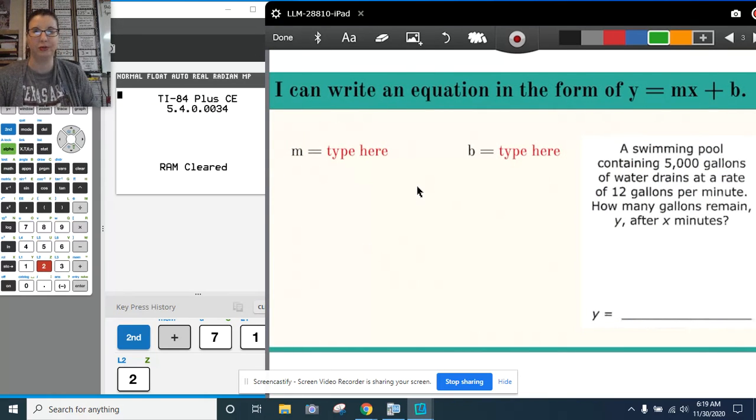We might see it in a verbal situation. So a swimming pool contains 5,000 gallons of water and it drains at a rate of 12 gallons per minute. How many gallons remain, y, after x minutes? So we're setting up and writing an equation that no matter how many minutes we're looking at, we can get the answer. And this is in slope-intercept form.